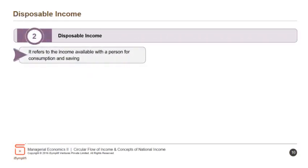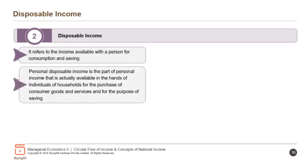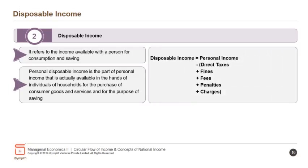Disposable income refers to the income available with a person for consumption and saving. Personal disposable income is the part of personal income actually available to individuals or households for the purchase of consumer goods and services and for saving. Disposable income equals personal income minus the sum of direct taxes, fines, fees, penalties and charges.